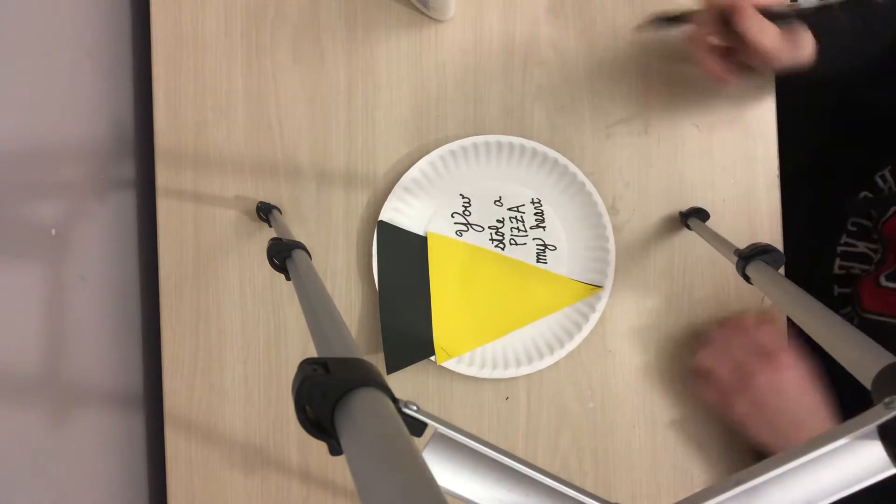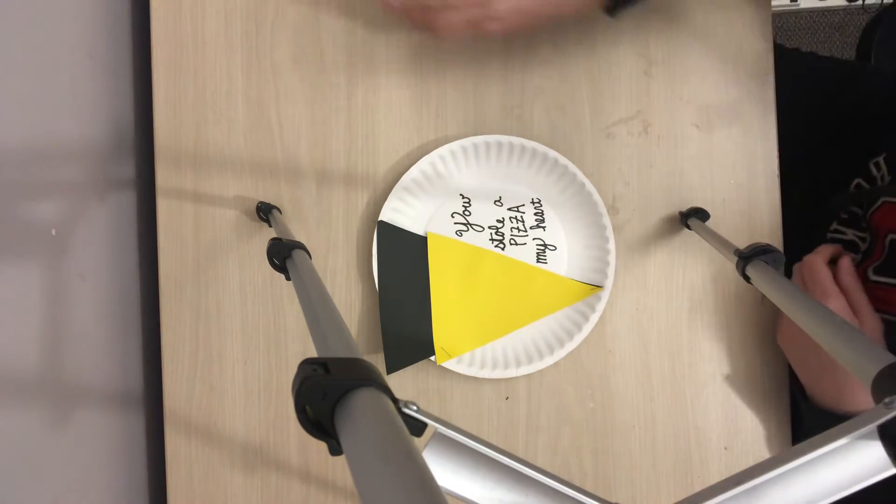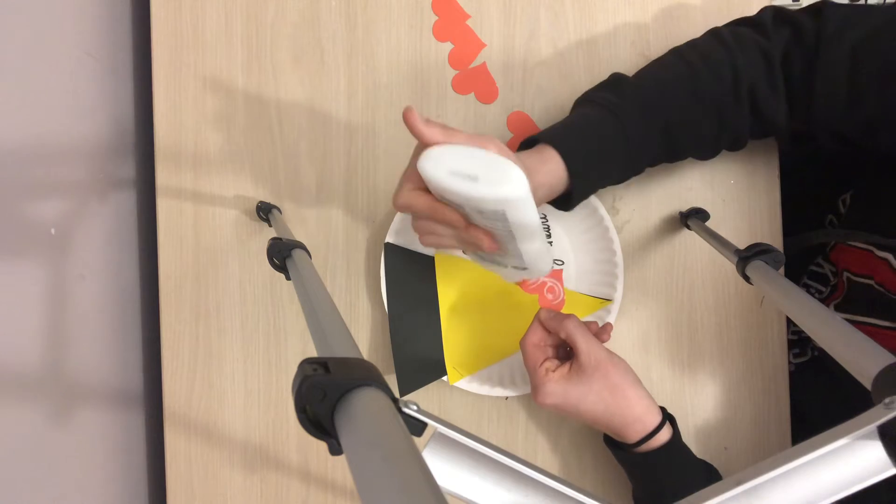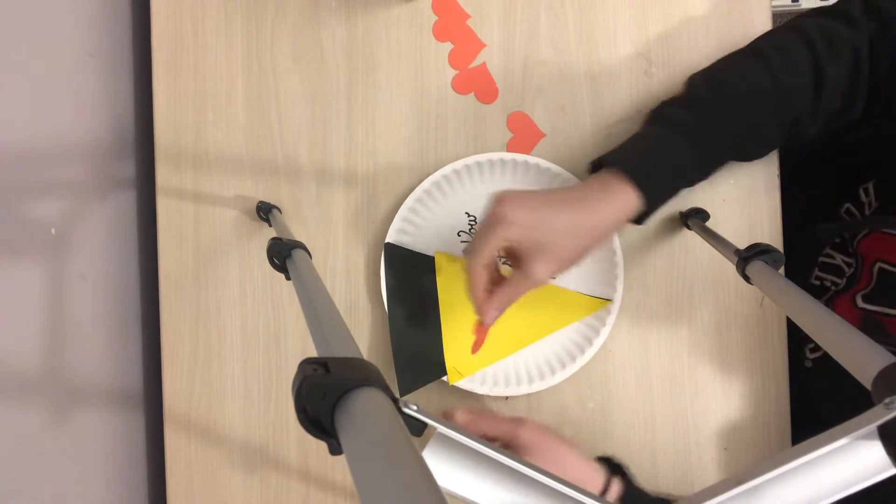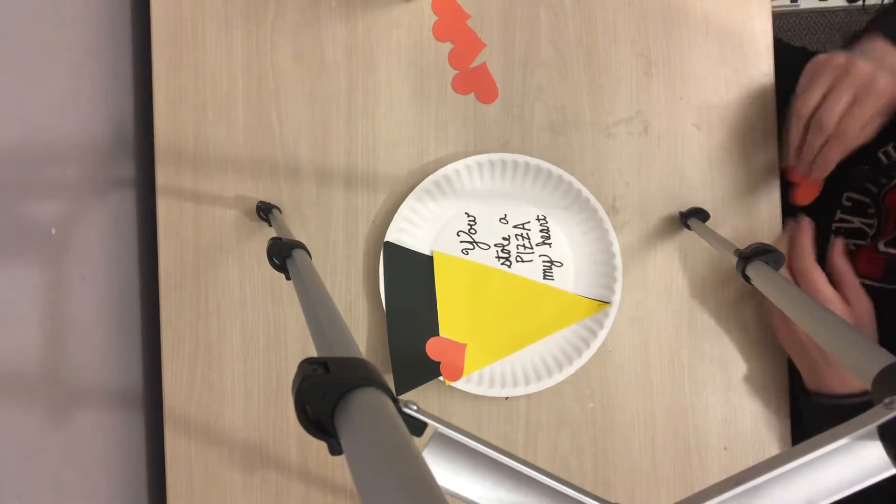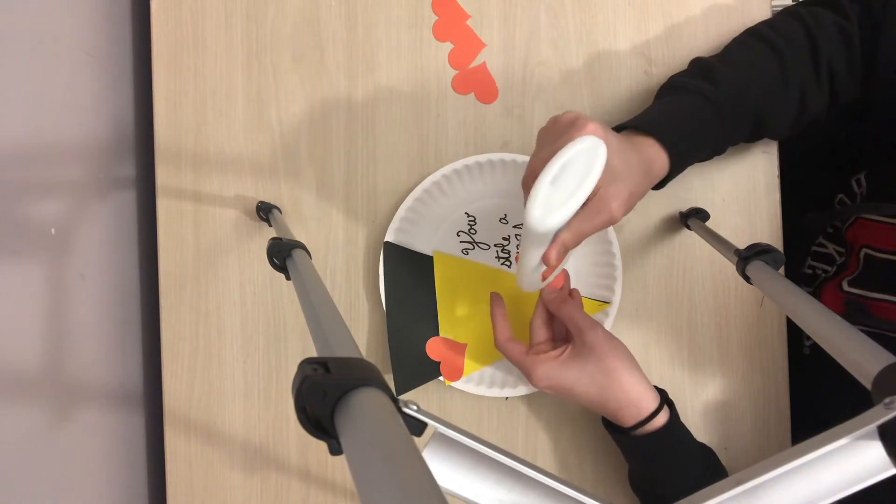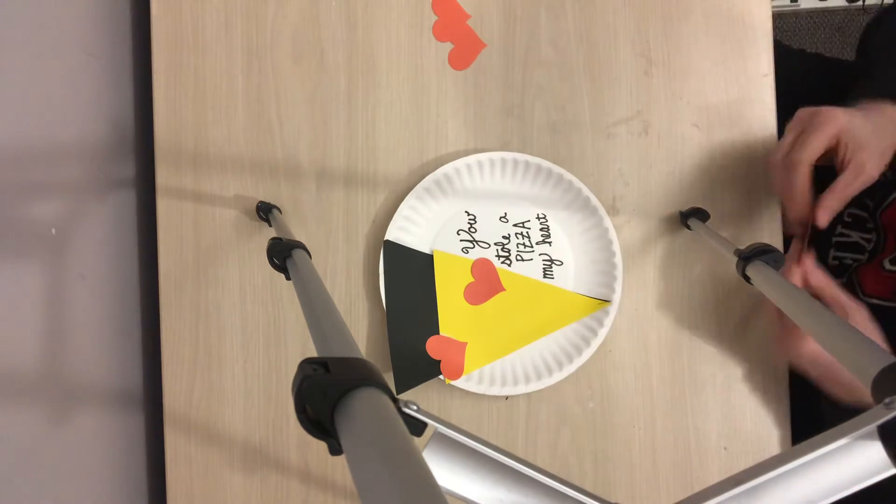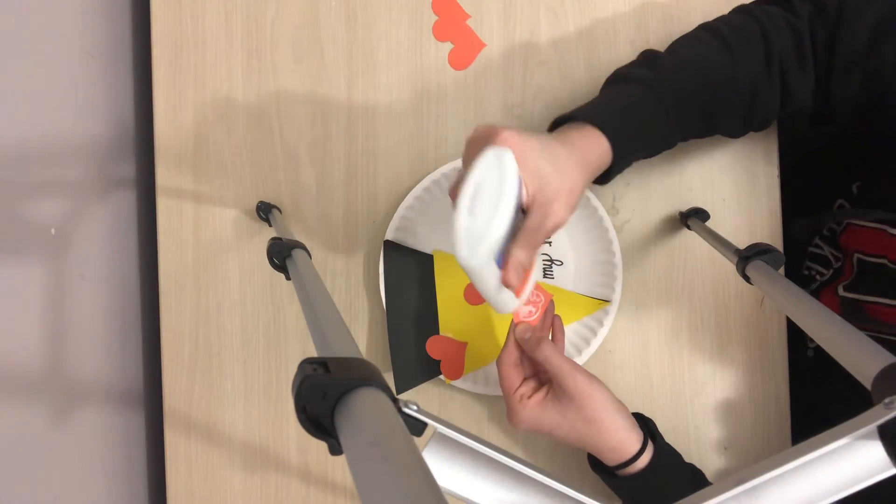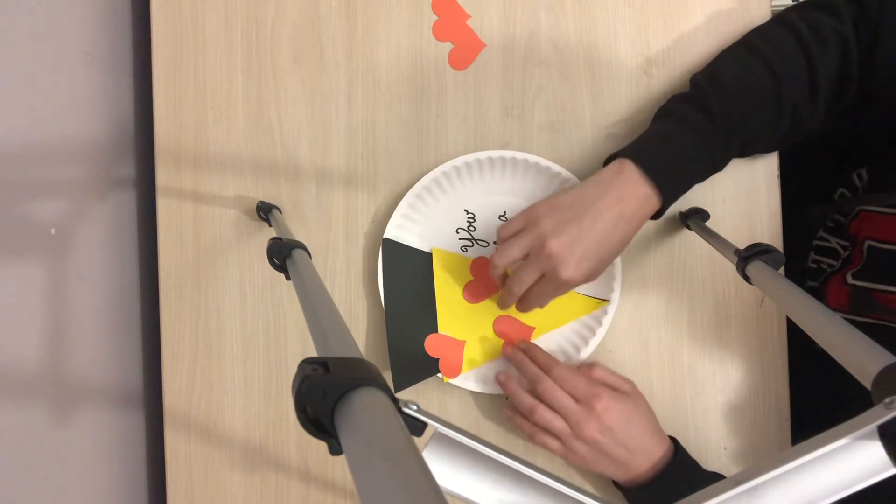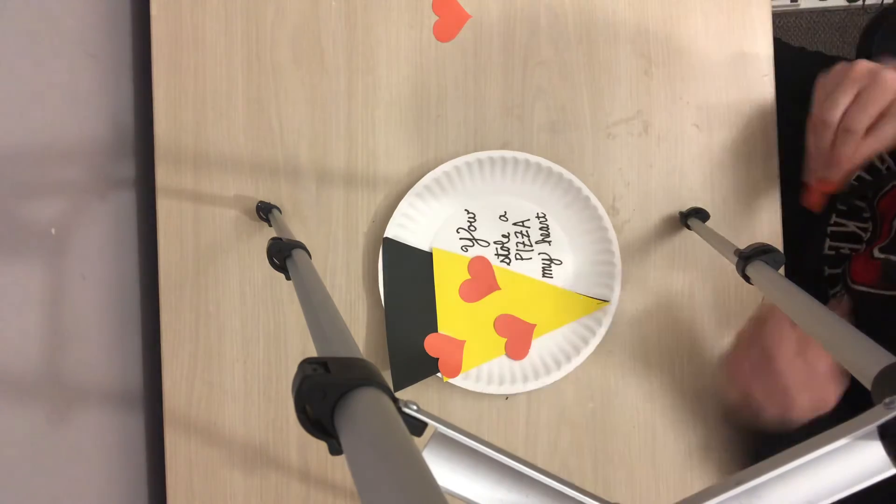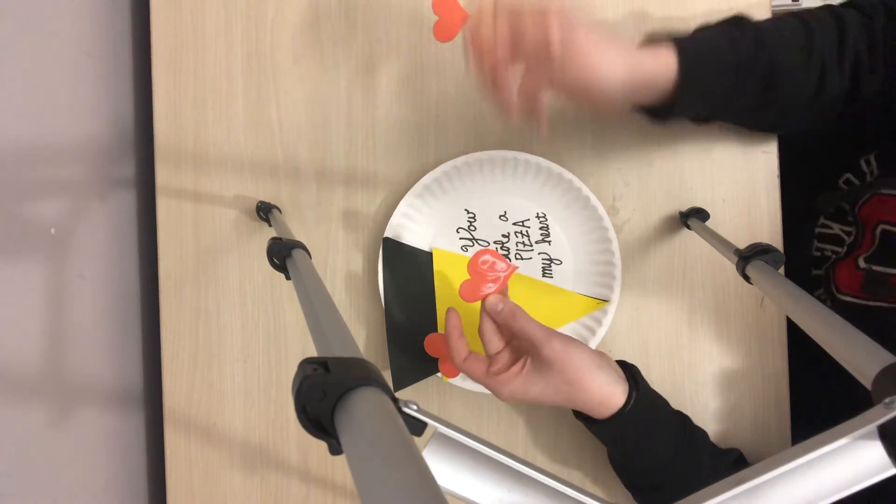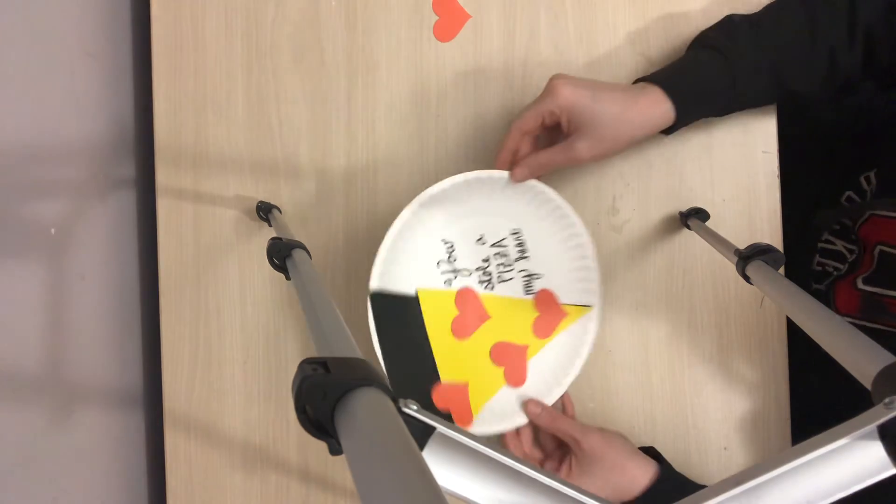Pause here. Next, you're going to take your red hearts and those are going to be your pepperonis. And you're going to put glue on the side of it and then stick them on your triangles. And then you're done.